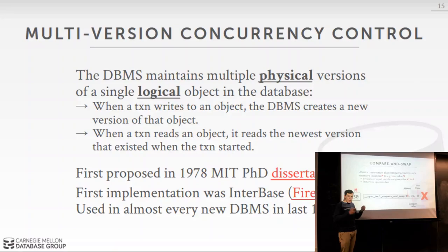MVCC is not a new protocol — it was first proposed in an MIT dissertation in 1978, then implemented in the early 1980s at DEC in a system called Interbase. Interbase still exists in some form today. The Interbase from the 1990s, when Borland bought it, was open-sourced as Firebird. A fun fact: the original name for Firefox was going to be Firebird, but because of the overlap with this project, they renamed it to Firefox.